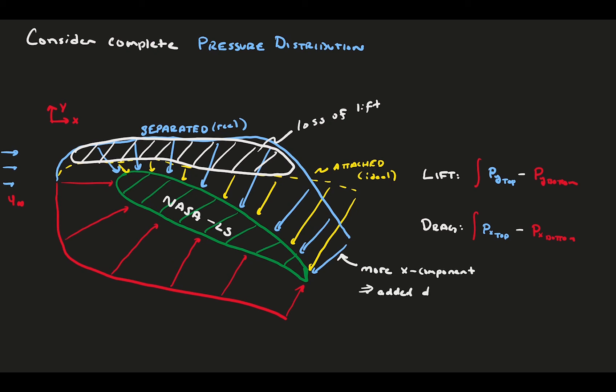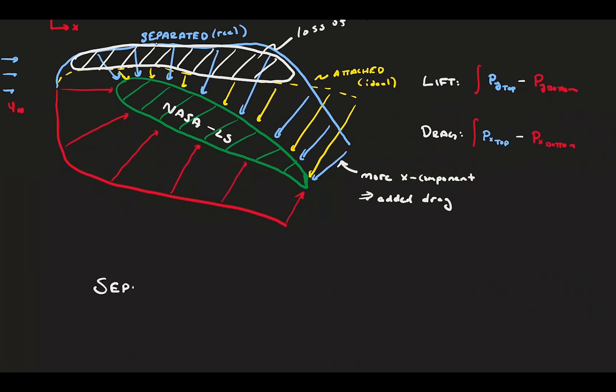Second, near the trailing edge, the pressure has a larger component in the X direction, leading to added drag. So, we have two main characteristics of separated flow. There is a drastic reduction in lift, and this phenomena is called stall. You want to avoid stall during flight. Second, we have added a lot of drag, which ruins our flight efficiency.